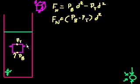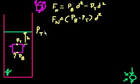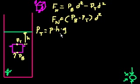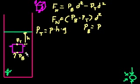Now let's figure out what those pressures are. Let's say the cube is submerged h meters into the water. The pressure at the top is equal to the density of the liquid times h times gravity. The pressure at the bottom is the density of the liquid times the total depth — which is h plus d, since we're another d down — times gravity.